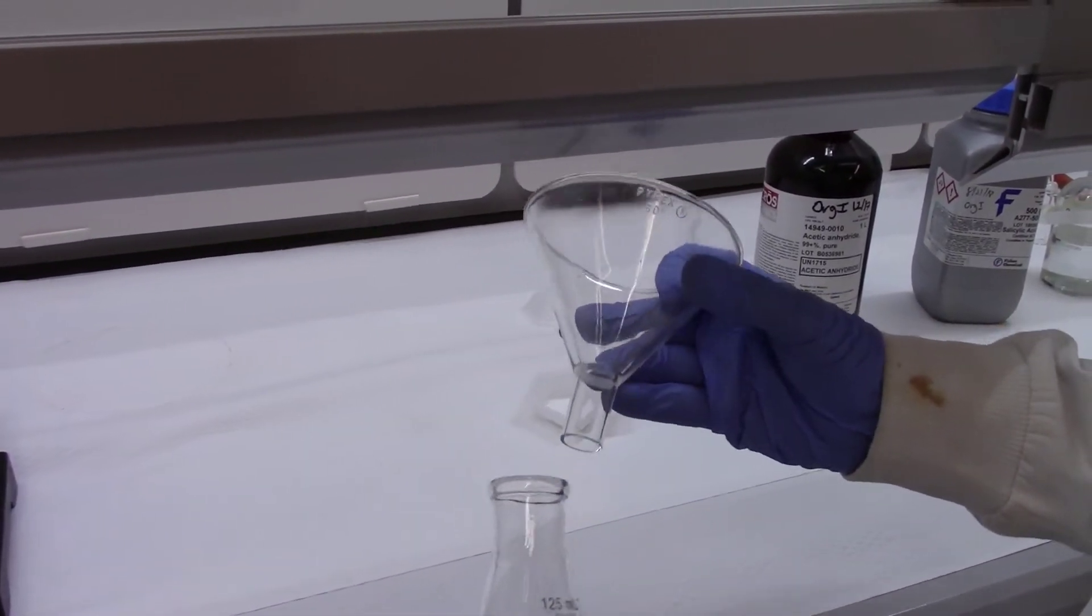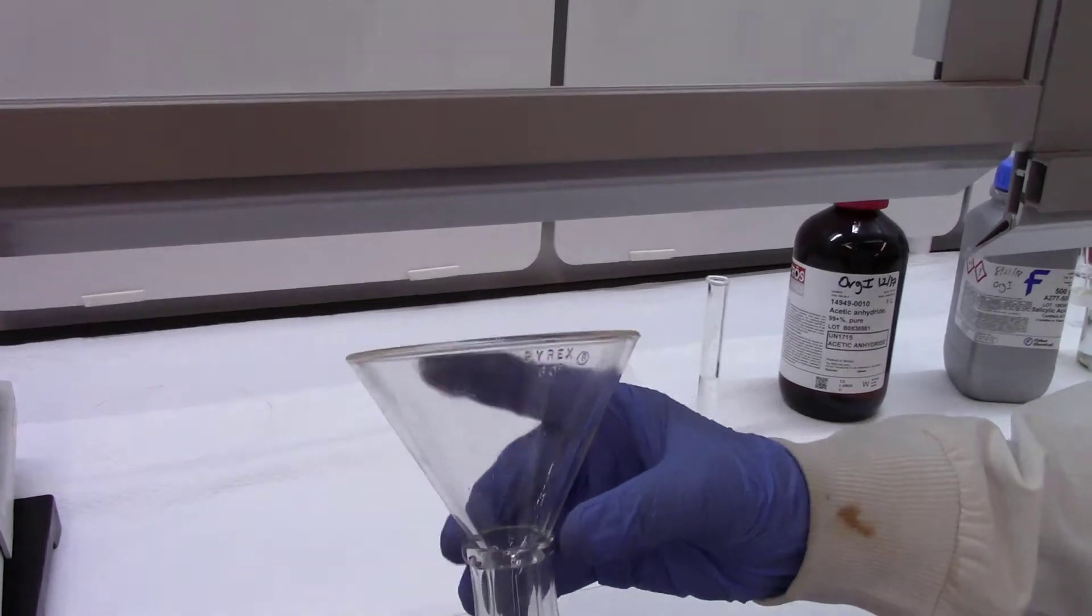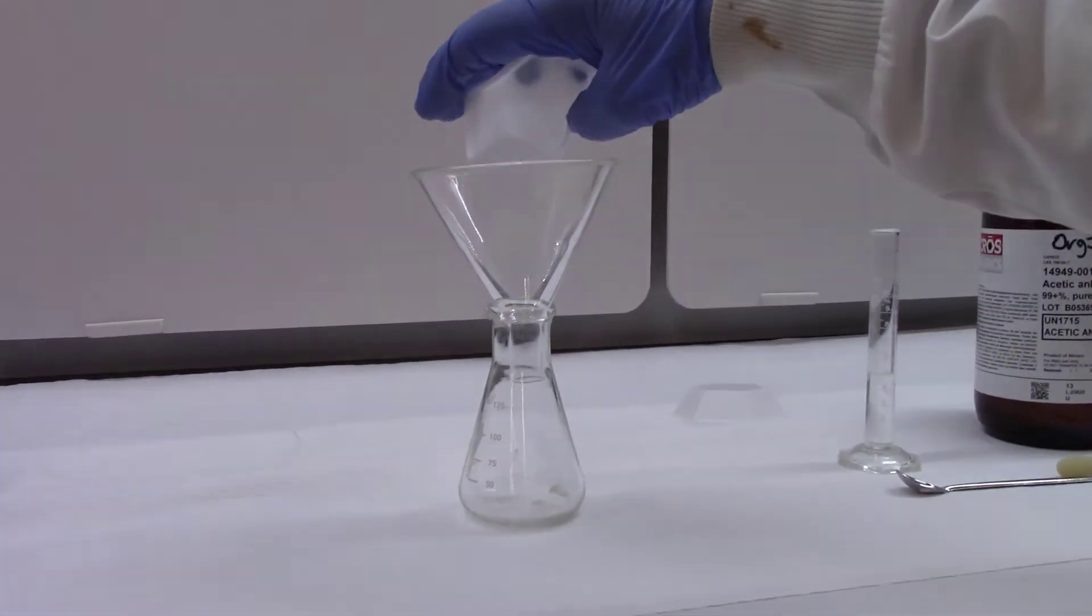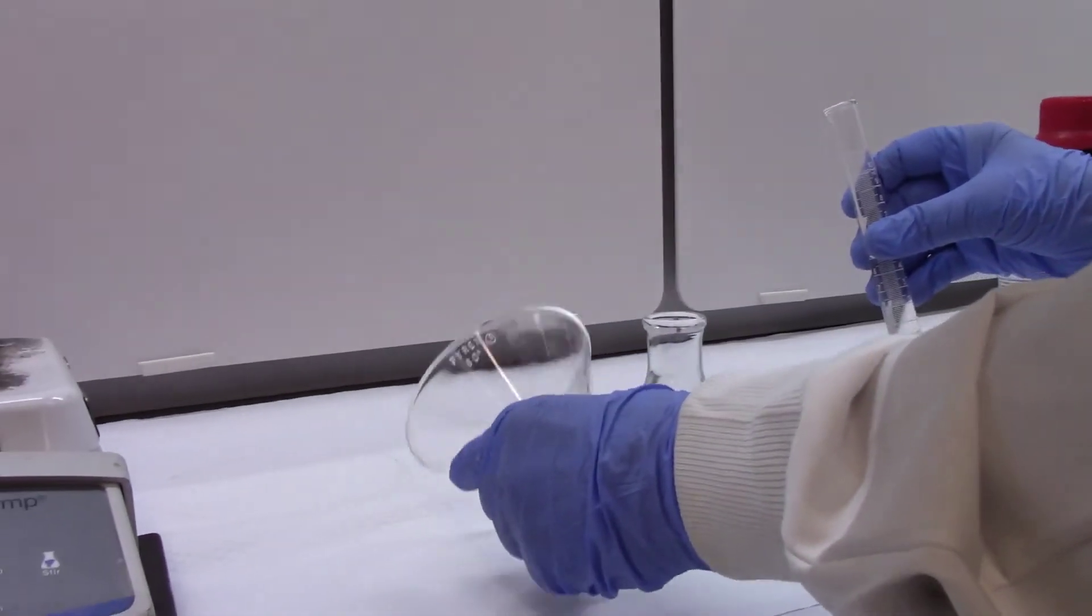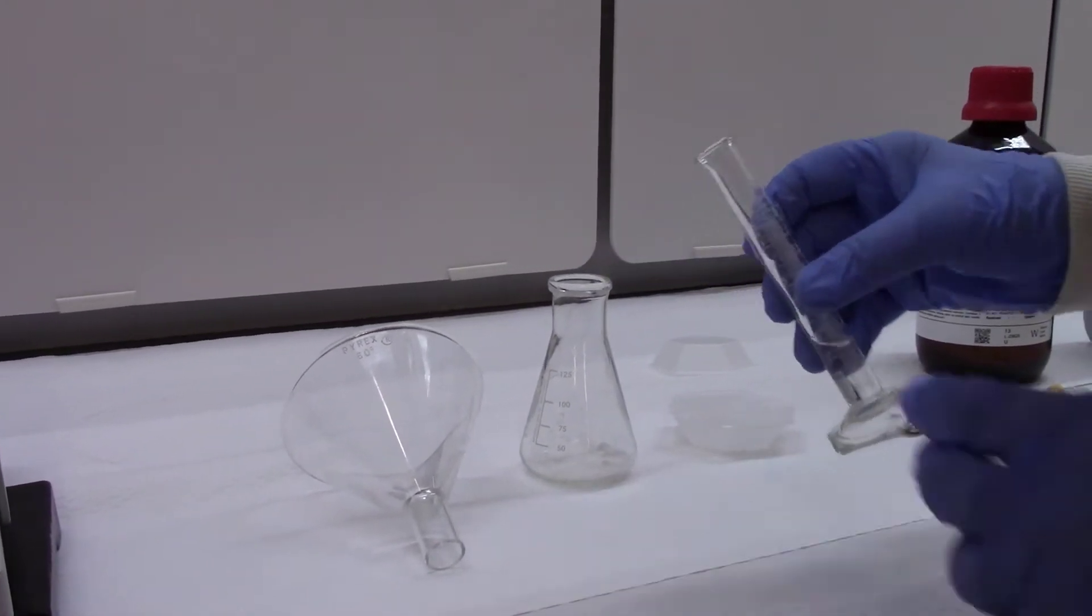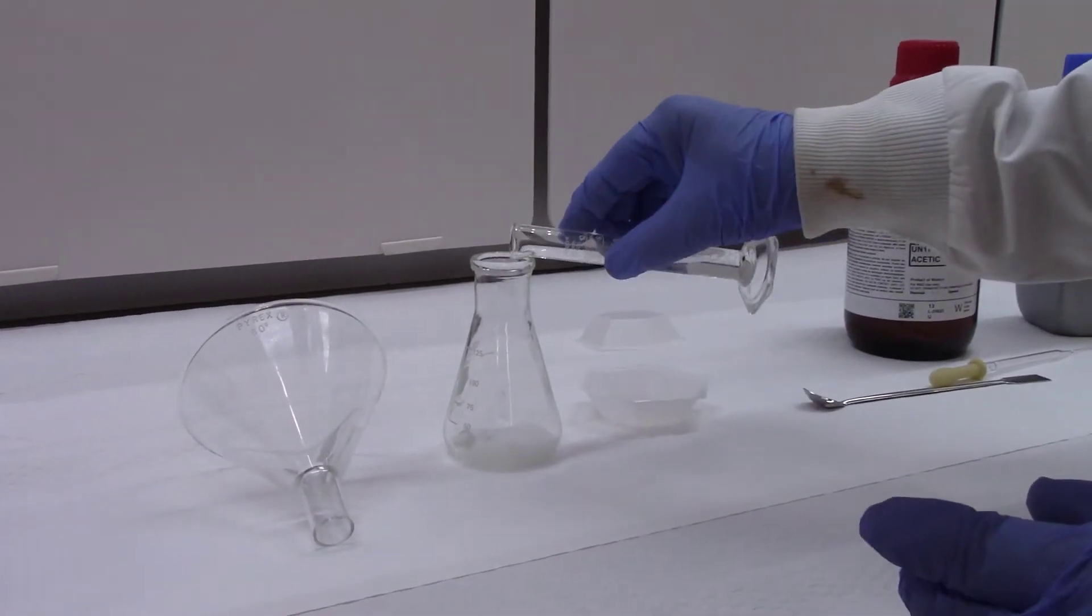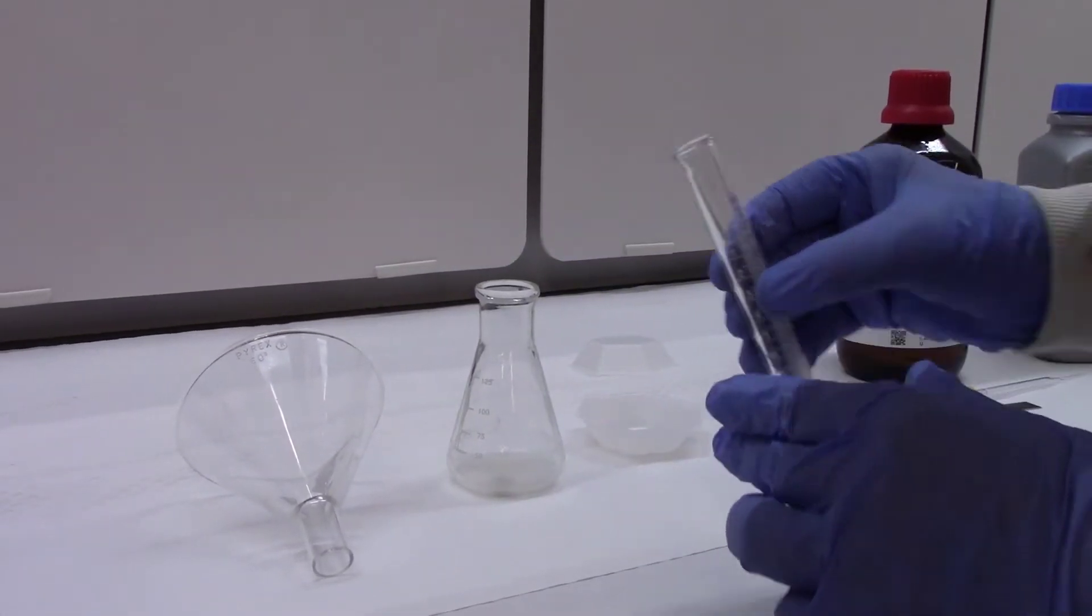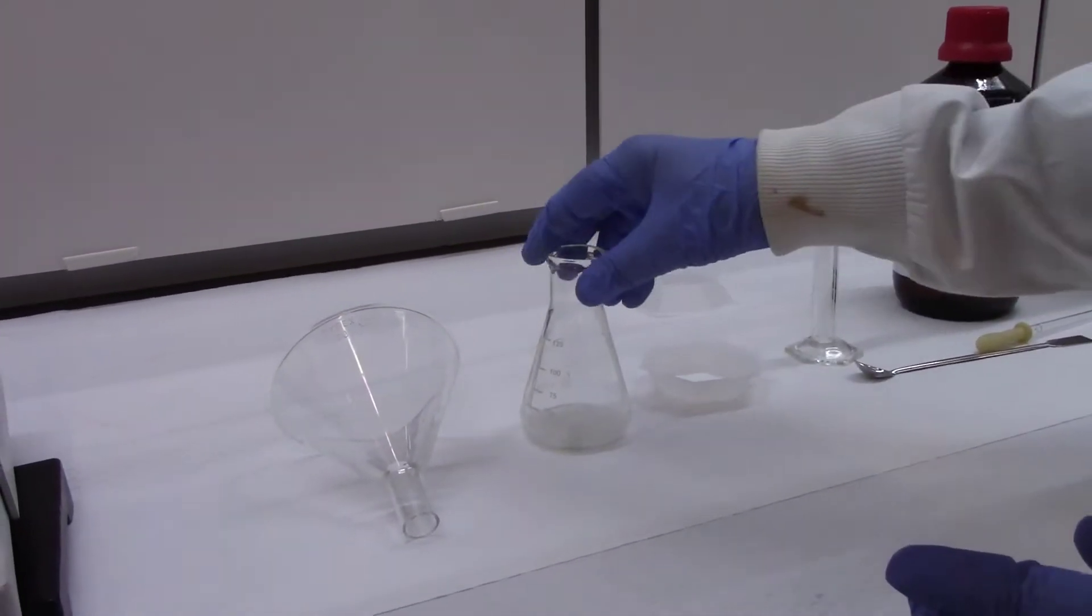This is an Erlenmeyer flask with a stir bar, and this is a wide mouth funnel used for adding powders. I'm adding two grams of salicylic acid in the Erlenmeyer flask. Then I'm going to add portion-wise acetic anhydride. It doesn't have to be very slow. You have to swirl it, add small portions of it, swirl the flask. Swirling is circular motion, it's not shaking.